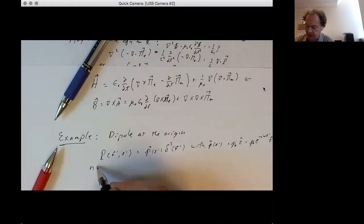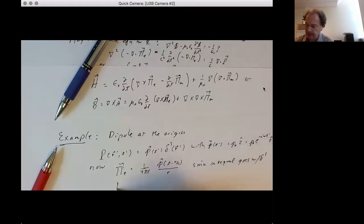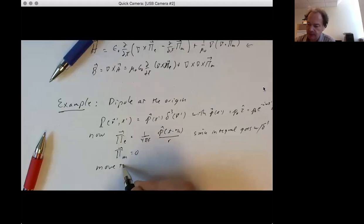Now if you go through the analysis, we find pi E equals one over 4 pi epsilon naught times that integral, but that integral falls apart because of the delta function, and you just get P of t prime over r. Pi M is simply zero. And so it's useful to move to spherical coordinates before you differentiate.